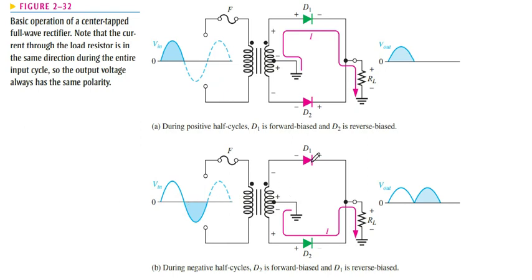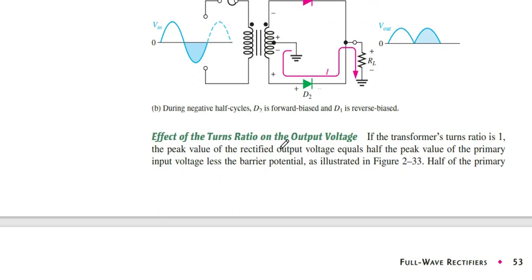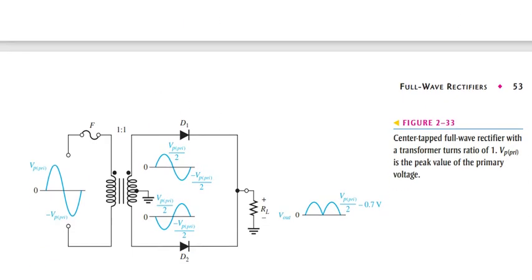During the negative half cycle, D1 is reverse biased and D2 is forward biased, so we get output again. This means in both half cycles we get output with no gap. The center-tap transformer divides the voltage into two halves — each half cycle passes through D1 then D2 in alternate turns. We also subtract the barrier potential of 0.7 volts from the output.